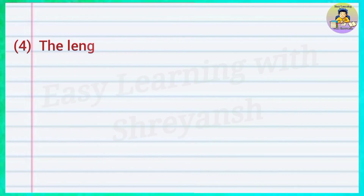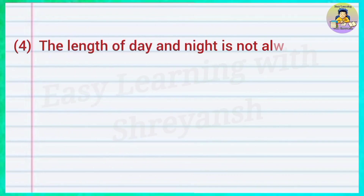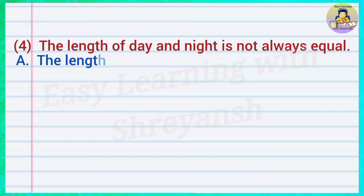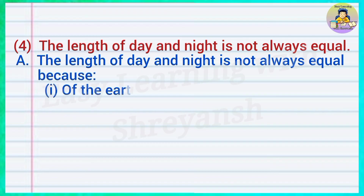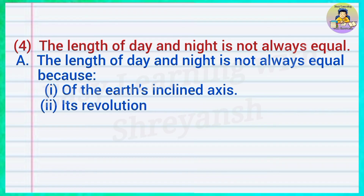Four — the length of day and night is not always equal. Answer: The length of day and night is not always equal because of the earth's inclined axis and its revolution around the sun.